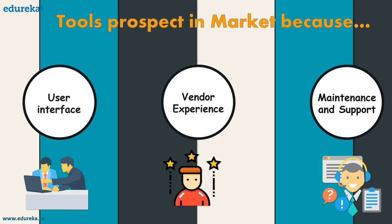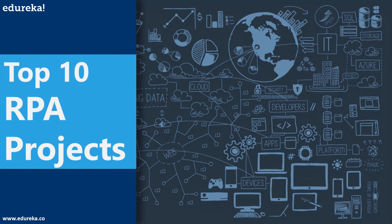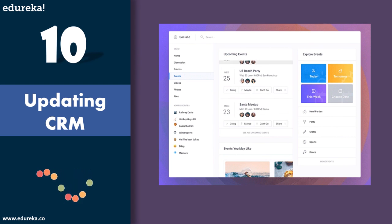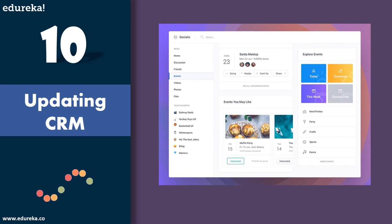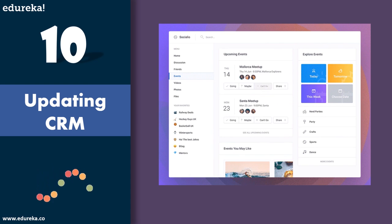Now that you know what RPA is and its tools, let's get into the main topic: the top 10 RPA projects, or the most common ways RPA is used in today's industries. At number 10, we have updating CRM. Any enterprise has a sales team that needs to update customer contact details — that task can definitely be automated using RPA.